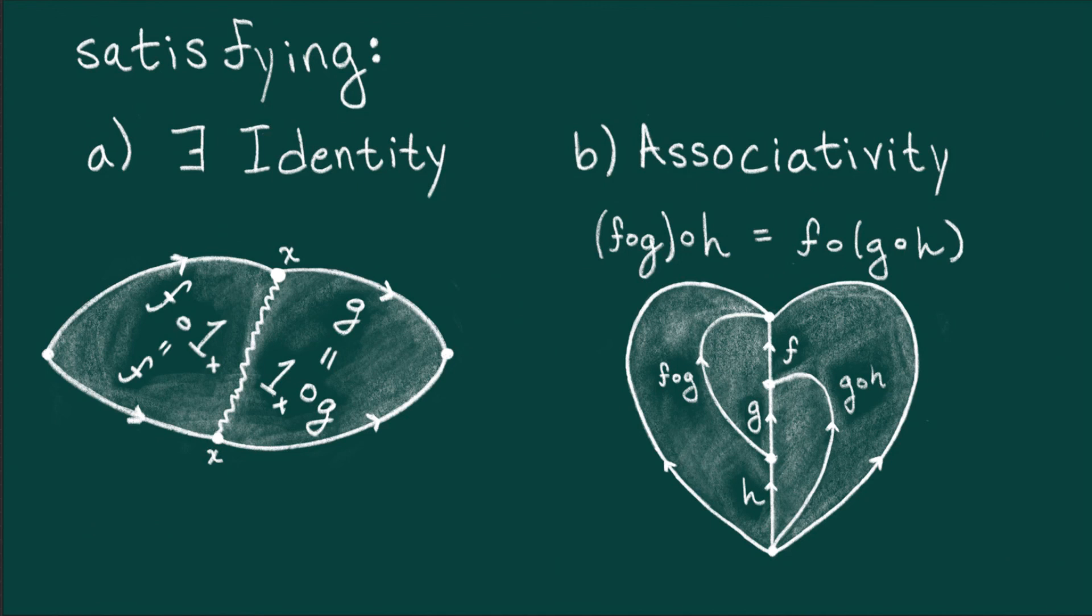Oh, and for those of you who enjoy pushing around formal symbols, I'd recommend proving that any two, quote, identity maps are equal.